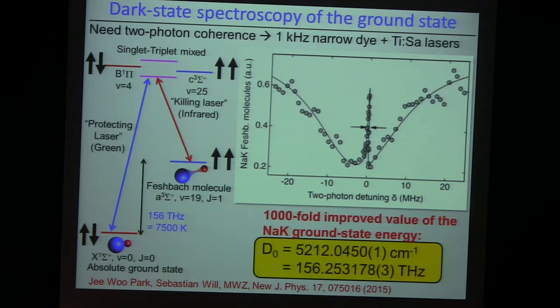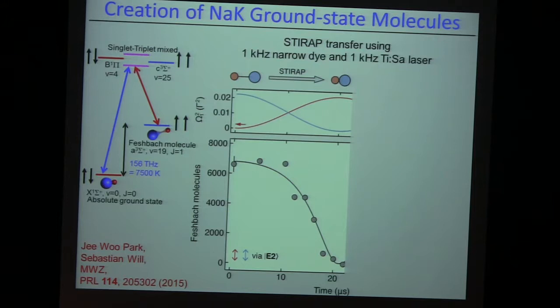Usually if you shine in your red laser and you're resonant with one of these excited state transitions, then you see a loss curve. But if you also have this coupling laser on the blue one, and you find the exact resonance that gets you into the ground state, then there's this beautiful protection window opening up. This is simply EIT — as a by-product, we now know the ground state energy of NaK to an astonishing number of digits.